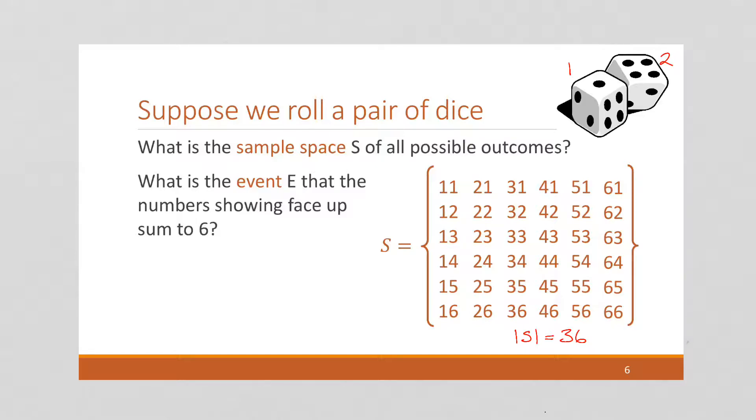Well, we want to figure out this event E, that the numbers showing face-up sum to 6. Well, let's take a look at our chart. 1 plus 5 sums to 6, 2 plus 4, 3 plus 3, 4 plus 2, 5 plus 1. Those are the only ones that sum to 6. And so we can say, we can recall our class E to equal set E, there we go, set E, to be those five elements. So we have 15, 24, 33, 42, and 51.